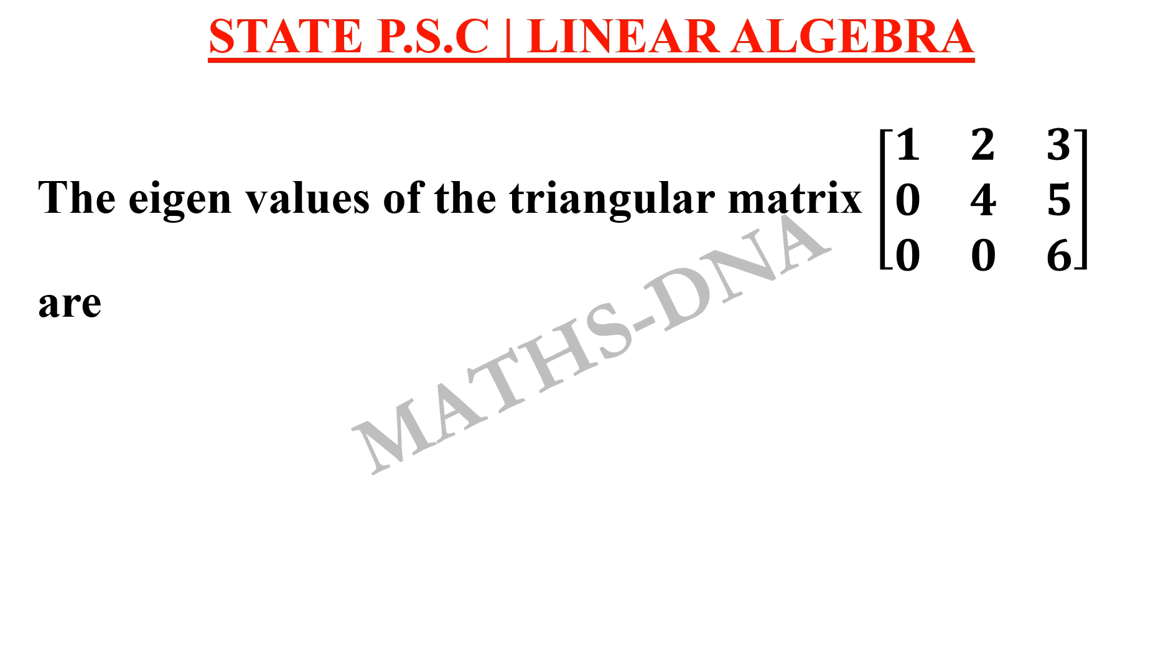The question is: find the eigenvalues of the triangular matrix - a 3×3 matrix whose entries are 1, 2, 3, 0, 4, 5, and 0, 0, 6. The options are: A) 1, 2, 3, B) 0, 4, 5, C) 0, 6, and D) 1, 4, 6.